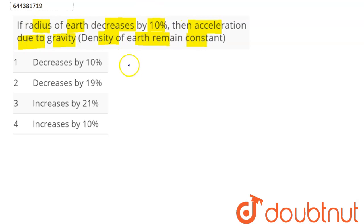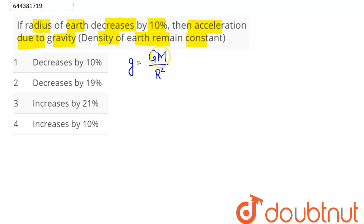We know that the acceleration due to gravity is given by the formula g = GM divided by r squared, where M is the mass and r is the radius of the planet, and G is the universal gravitational constant.